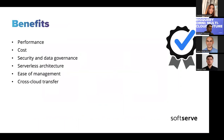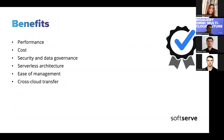Looking at benefits: performance — you get insights faster because data is not copied across clouds, and queries run in the same region. For cost, you save on network egress costs because data doesn't move. There are no additional charges to your AWS or Azure account related to BigQuery Omni analytics, because queries run on clusters managed by Google. You are only billed for running queries using the query pricing model.